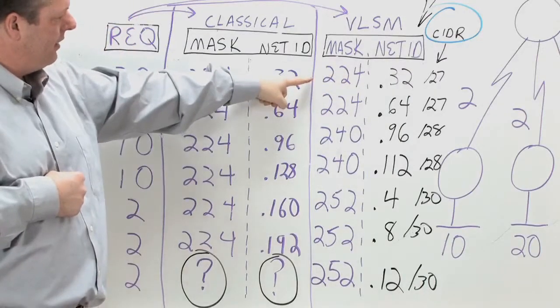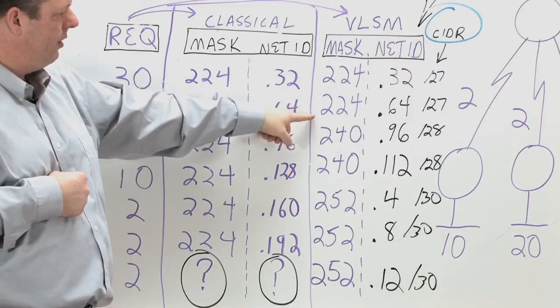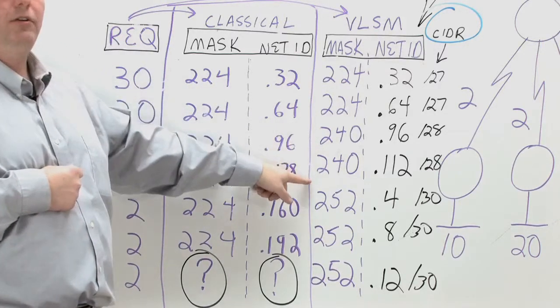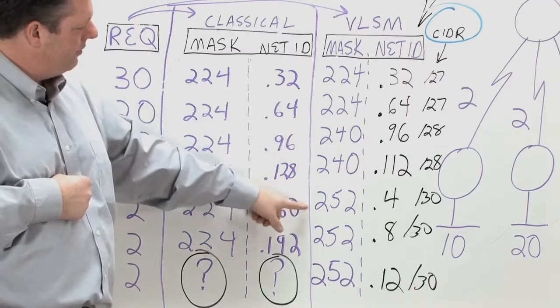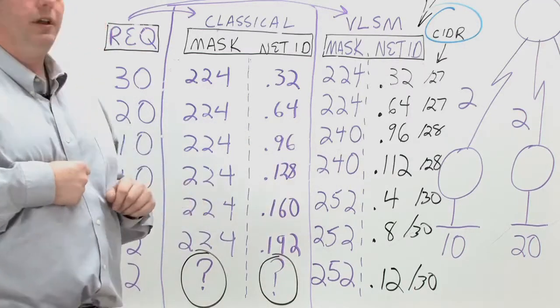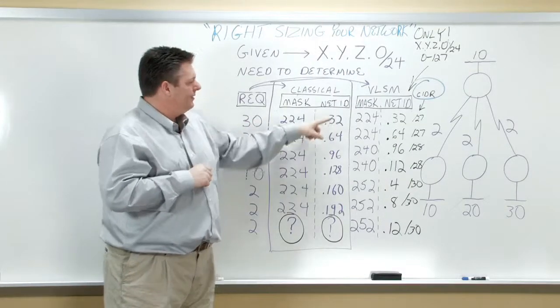So in this case, what I've done is I've applied 224.224, which gives me a group of 30 hosts, 240 and 240, which gives me a group of 14 hosts, and then 252 in each of these will give me a group of two hosts. So I haven't picked out my networks yet, but what I've done is I've determined this process and this need will solve my problem.